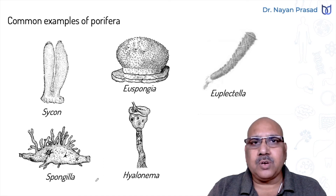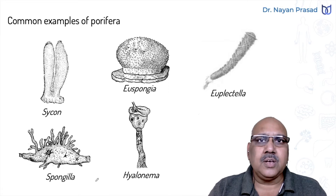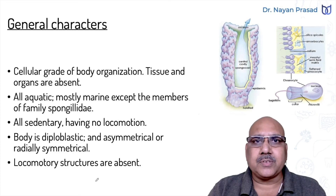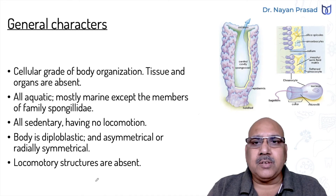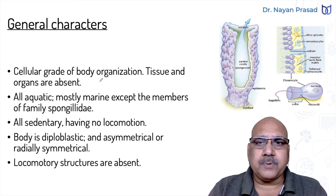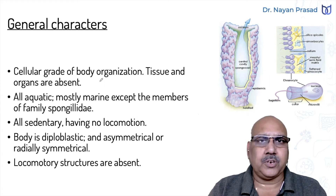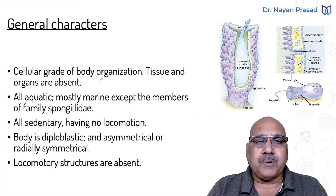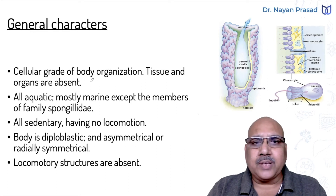Now let us talk about general characters, meaning the characters found in most of the members. They have a cellular grade of body organization. Tissues and organs are absent. The different activities of life are performed by the body cells.